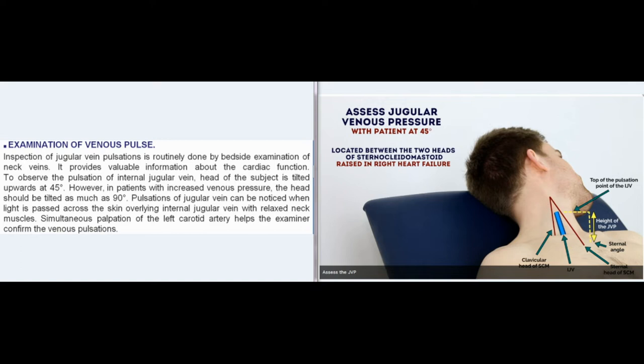However, in patients with increased venous pressure, the head should be tilted as much as 90 degrees. Pulsations of jugular vein can be noticed when light is passed across the skin overlying internal jugular vein with relaxed neck muscles.